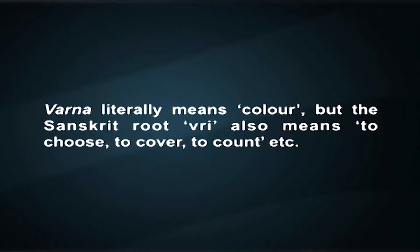The caste system has its origin in ancient India and underwent transformations during the medieval, early modern, and modern periods, especially during the times of the Mughal Empire and the British Raj. It consists of two different concepts, Varna and Jati, which may be regarded as different levels of analysis. Varna literally means color, but the Sanskrit root also means to choose, to cover, to count. The earliest reference to the occupational aspect of Chaturvarnia, or the fourfold Varna order, is found in the Purusha Sukta in Rigveda.